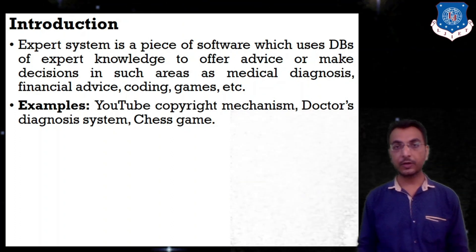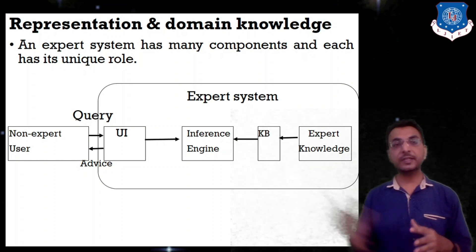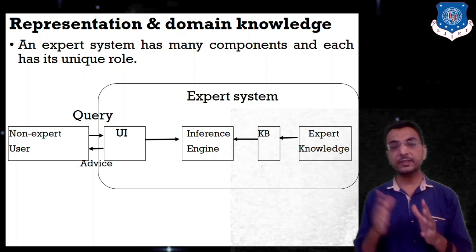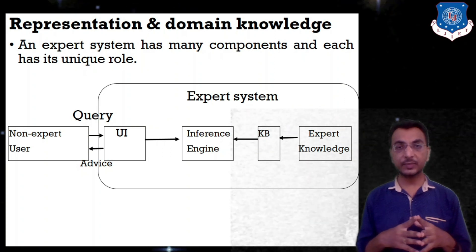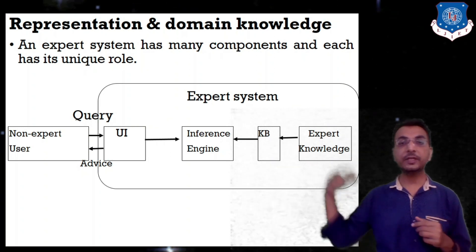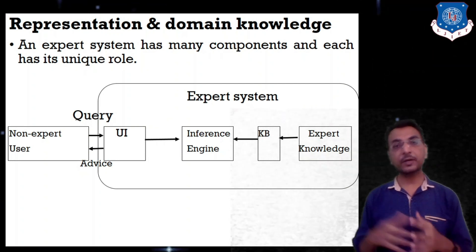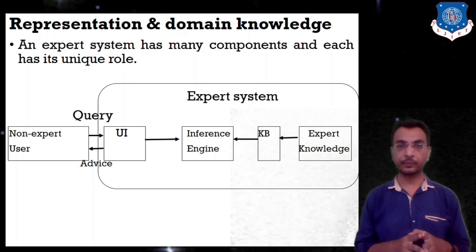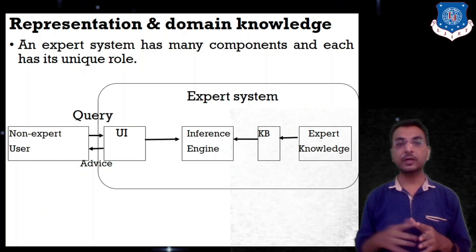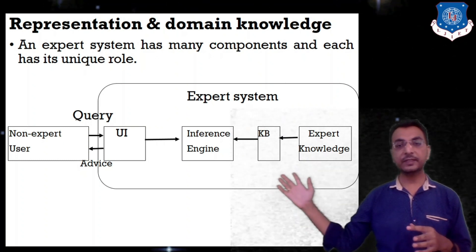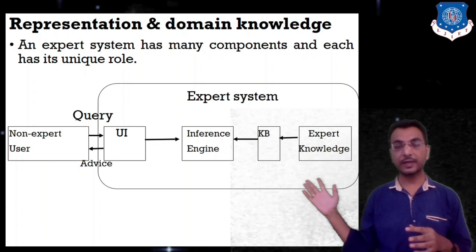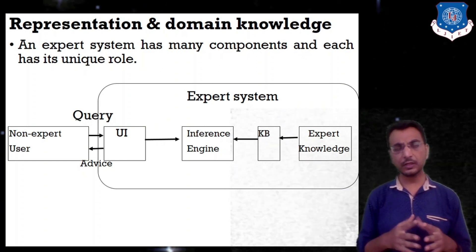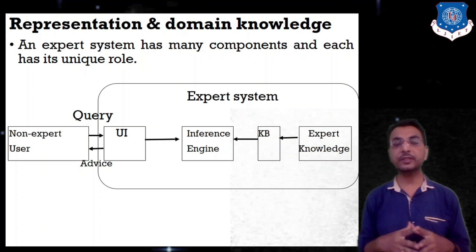Next is representing and using domain knowledge. How can we say that this is an expert system, and what are its components? An expert system has many components, each with a unique role. These include a user interface, an inference engine, a knowledge database, expert knowledge, and a non-expert user.